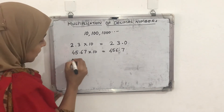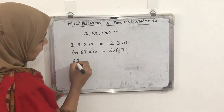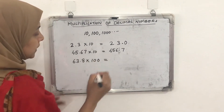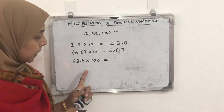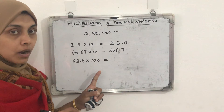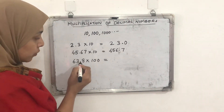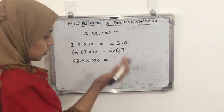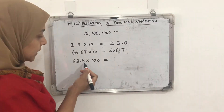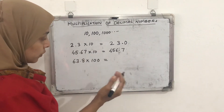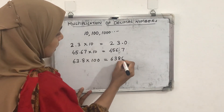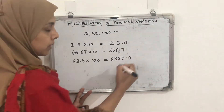Another question: 63.8 × 100. Here we are multiplying by 100, which has two zeros, so we want to move the decimal point two places to the right. But there is only one digit after the decimal point, so to make it two places we add one zero. The answer will be 6380.